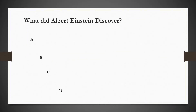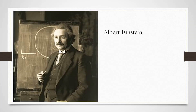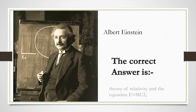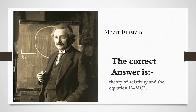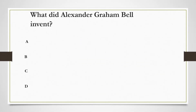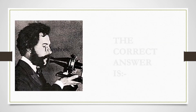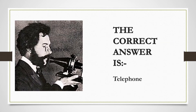What did Albert Einstein discover? A. Telephone. B. Mobile. C. Television. D. Computer. The correct answer is Telephone.